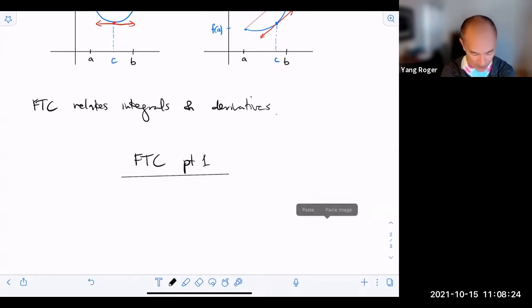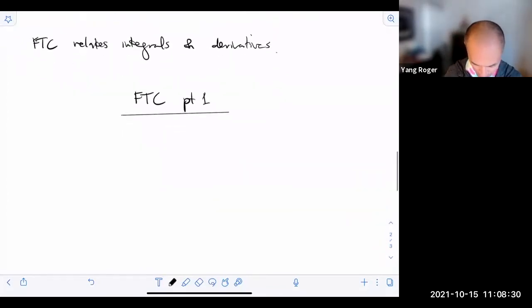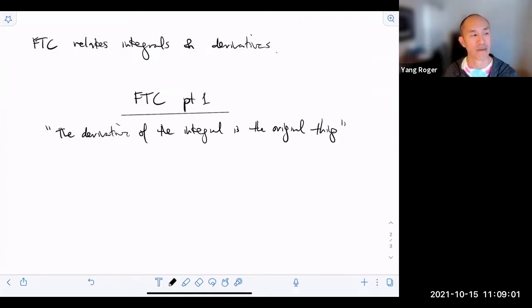So when you look at the fundamental theorem of calculus part one, what this is really saying is, putting these in air quotes, the derivative of the integral is the same, is the original thing. That's a very vague way of saying this. So don't tell any math professor I wrote that.